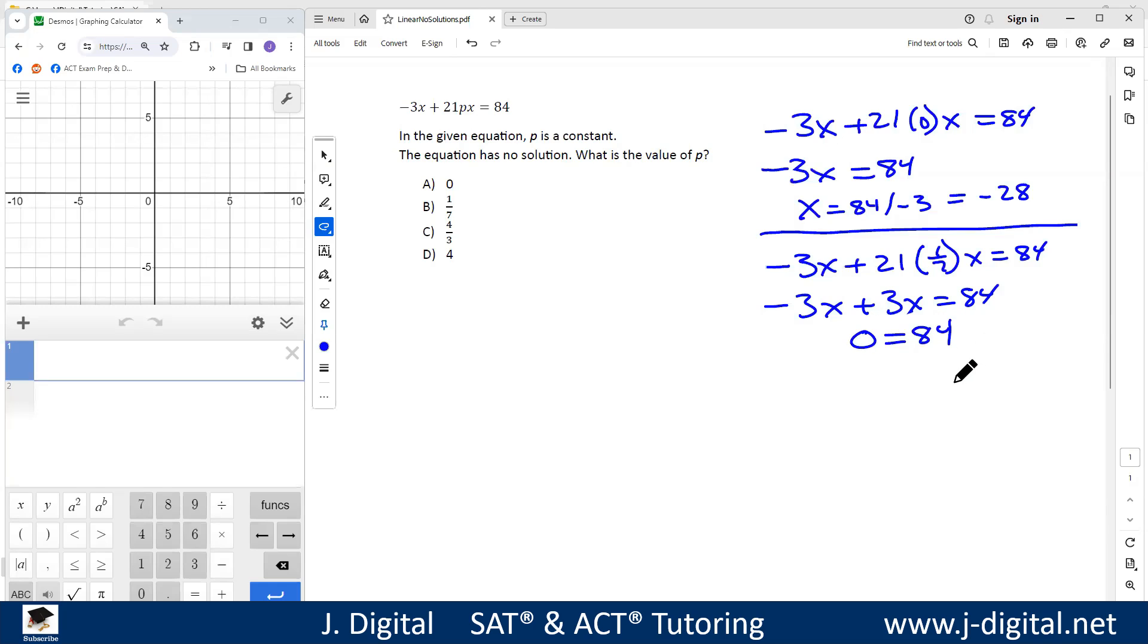Okay, when you have that, when the variables drop out and both sides of the equation have different values, then that's no solution. So it says no solution when p is 1/7.